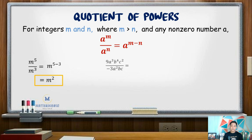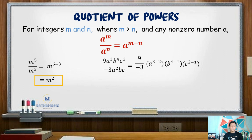Another example: 9a cubed b to the 4th c squared divided by negative 3a squared bc. Evaluate part by part. Numerical coefficients: 9 divided by negative 3 is negative 3. For a: 3 minus 2 leaves a value of a. For b: 4 minus 1 gives b cubed. For c: 2 minus 1 gives c. So the final answer is negative 3a b cubed c.